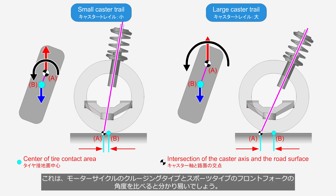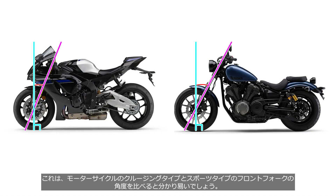You can easily understand this by comparing the angles of the front forks on cruising motorcycles and sport motorcycles.